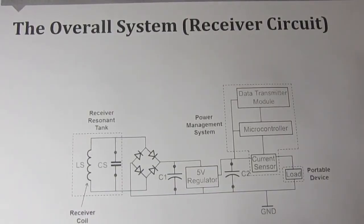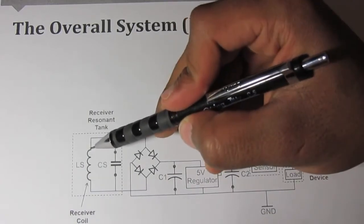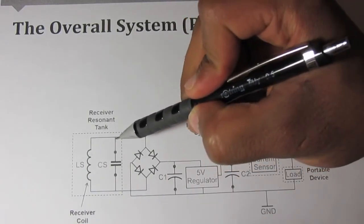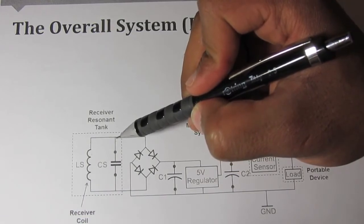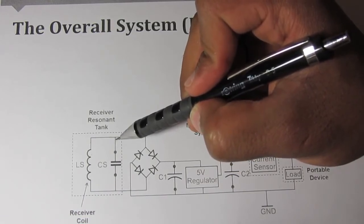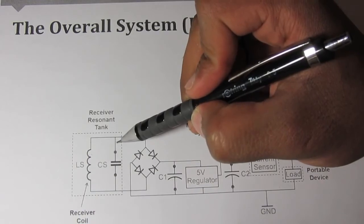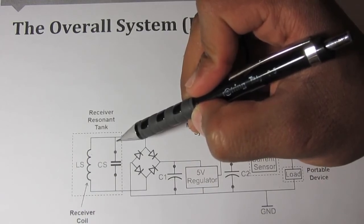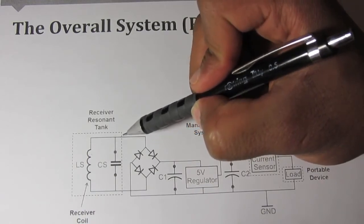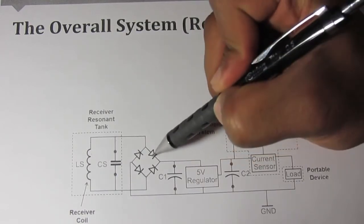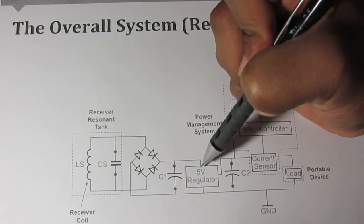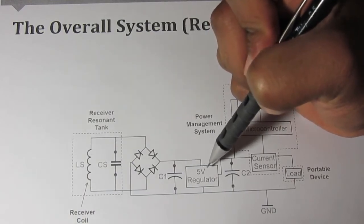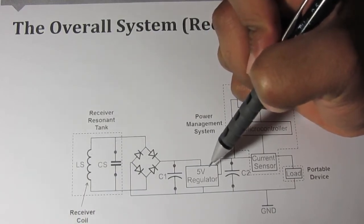Here is the receiver circuit. This is the receiver coil and it's connected in parallel with a capacitor to form a resonant circuit. This resonant circuit resonates at 125 kHz. Then the voltage and current are rectified by a full-wave rectifier, and the voltage is regulated to 5 volts which is required for the two devices.